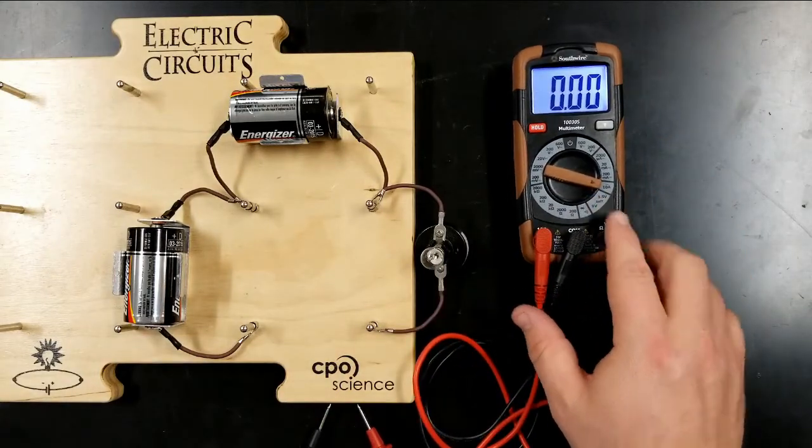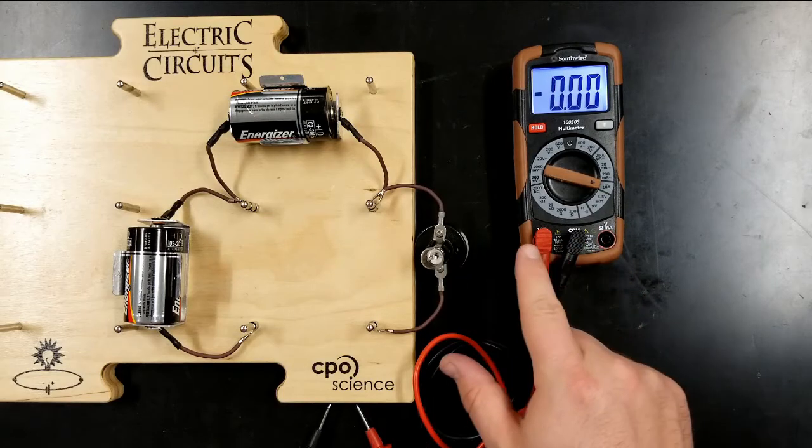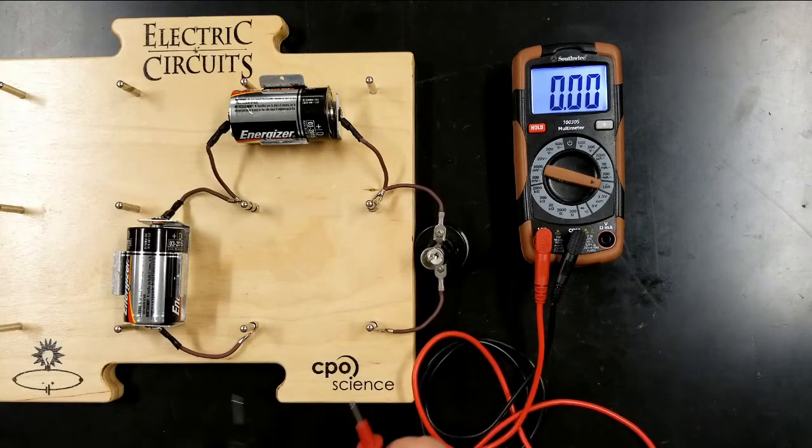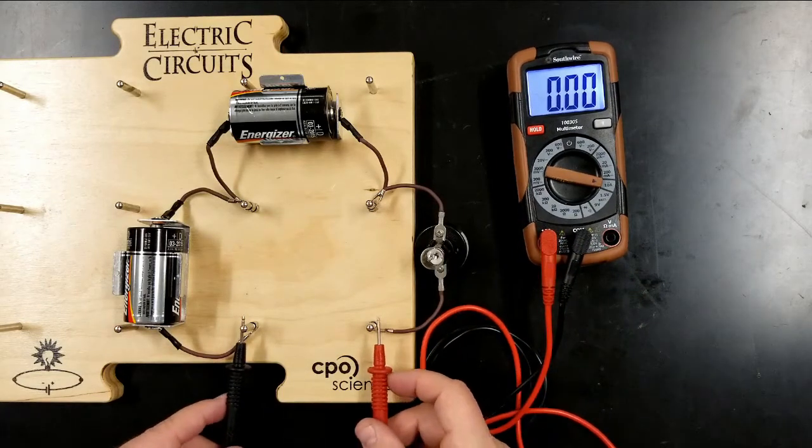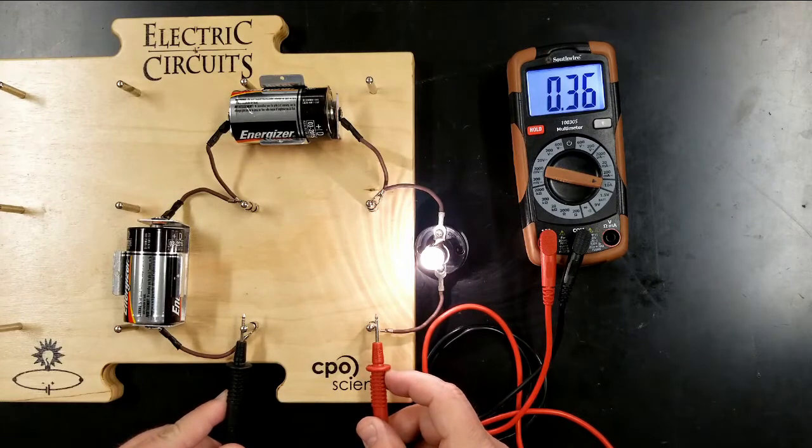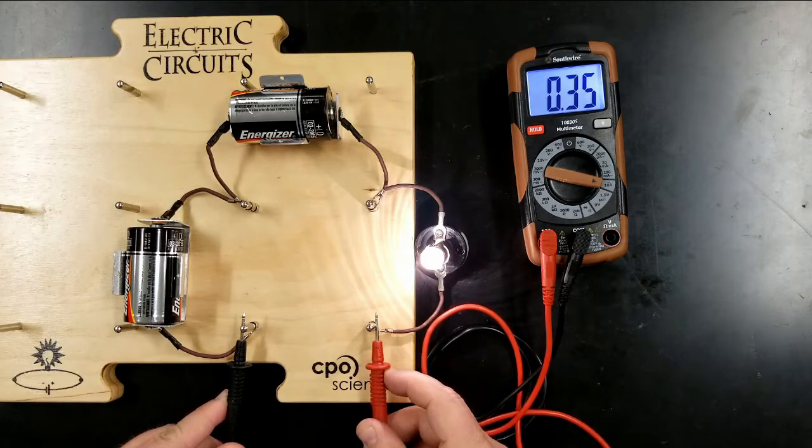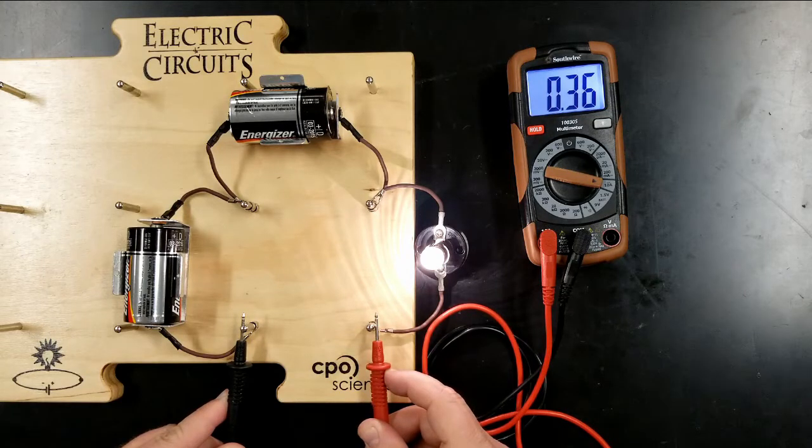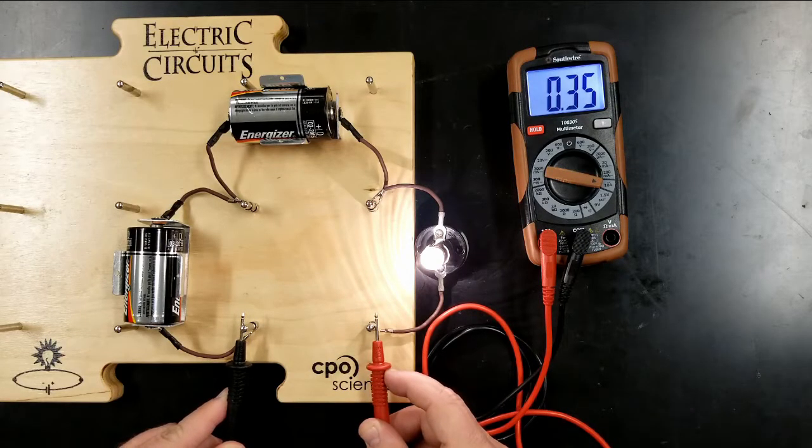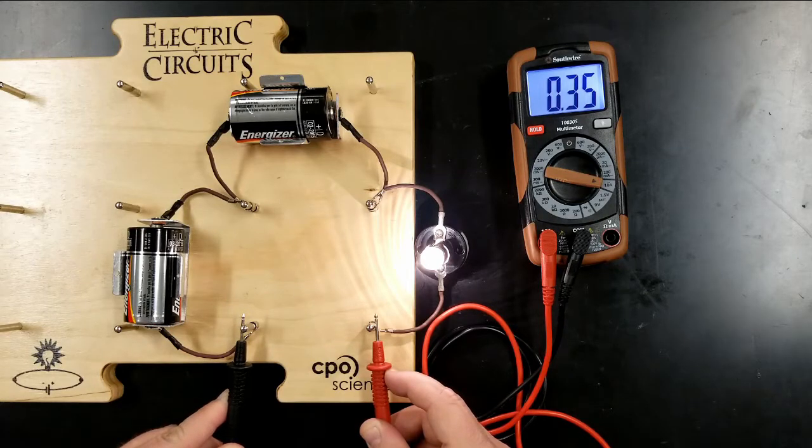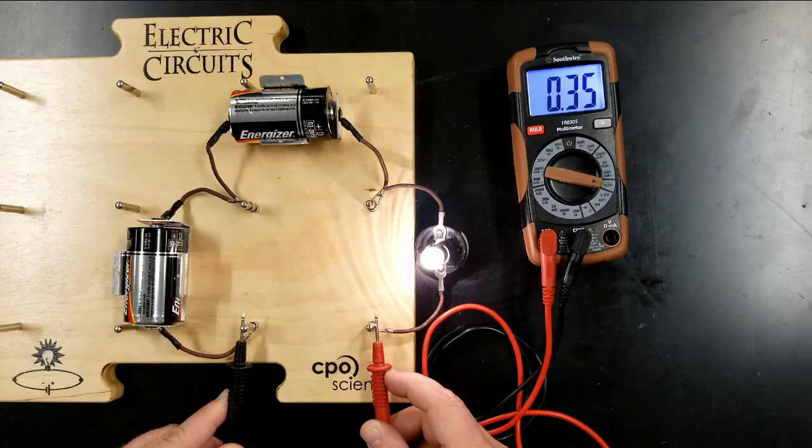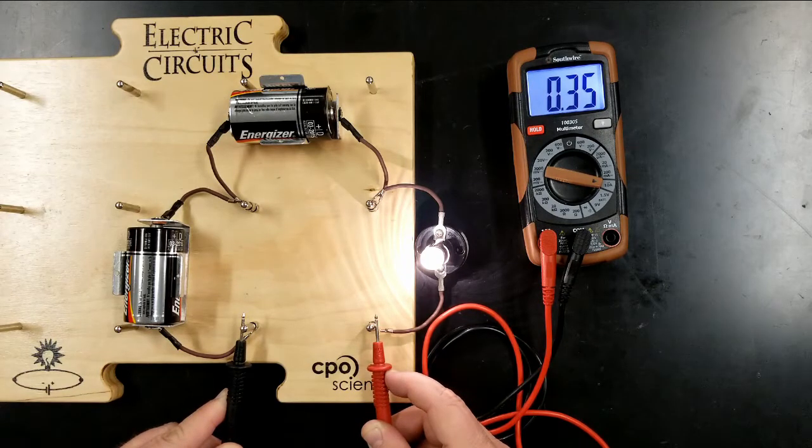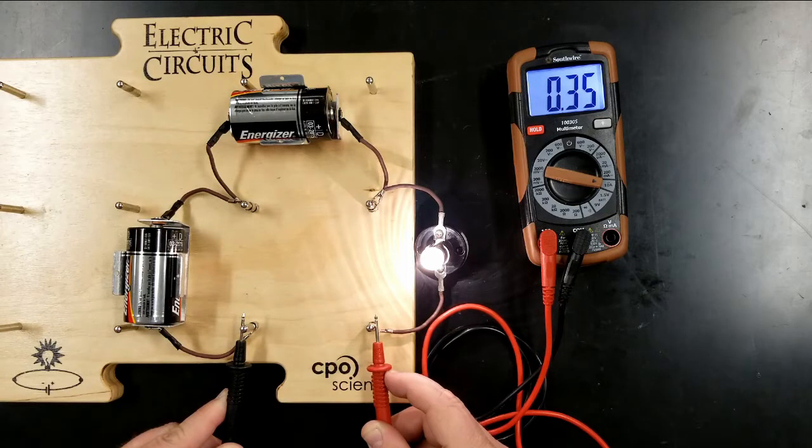So when I switch it to the next highest setting, the 10 amp setting, I need to move the red wire from the right side to the left side. Let's see if we get a light bulb again here. There we go. And so now my light bulb is lit up again. And notice that the current is reading 0.36 amperes, which is greater than 200 milliamps. The benefit to this setting is it gives me the current directly in amperes. I don't have to convert it from milliamps. So as bright as that light bulb is, it's only 0.35 amperes of current moving through it.